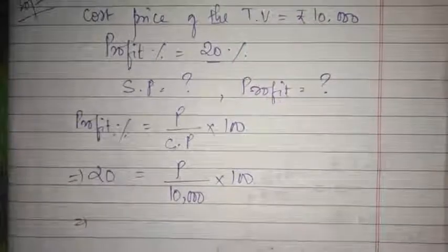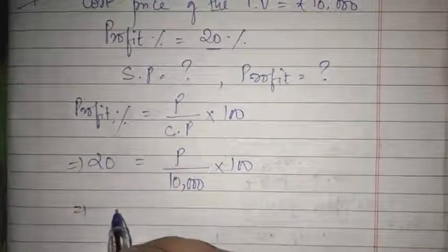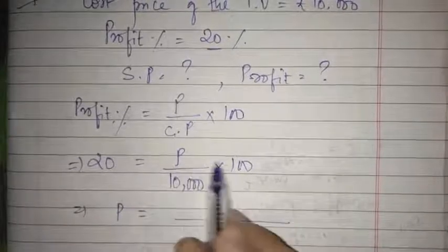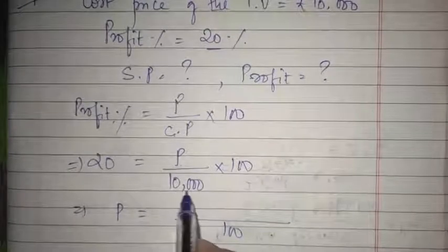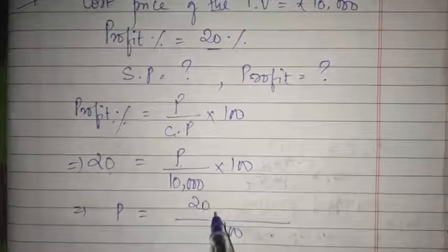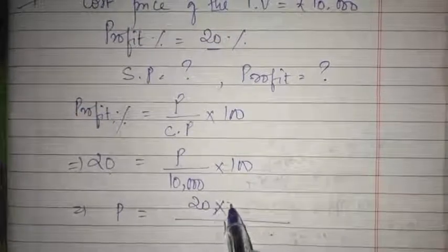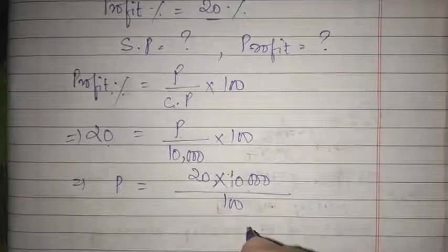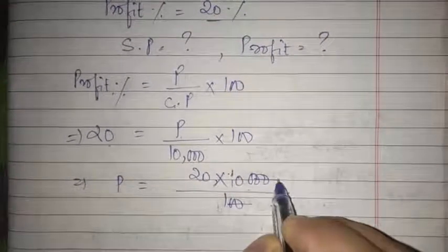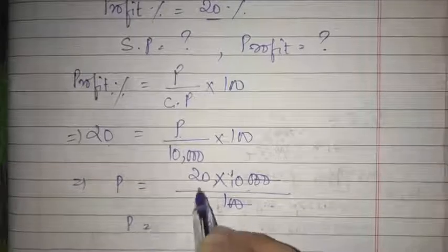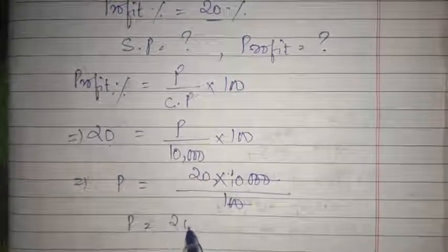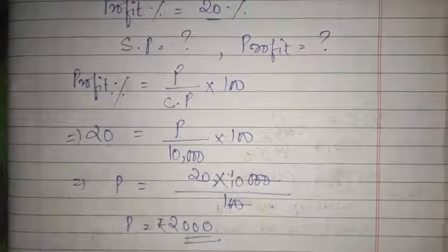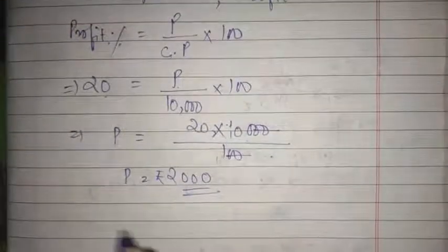Rearranging the formula to find P: P = (20 × 10,000) ÷ 100. Cancelling the zeros, P = 20 × 100 = 2,000. So the profit is rupees 2,000. Now we need to find the selling price SP.